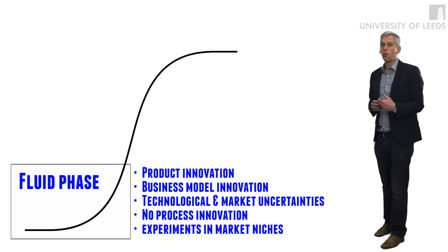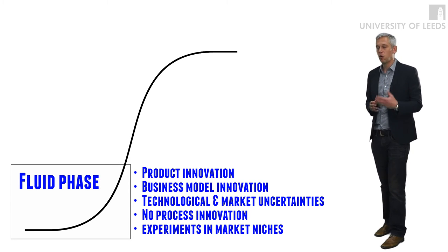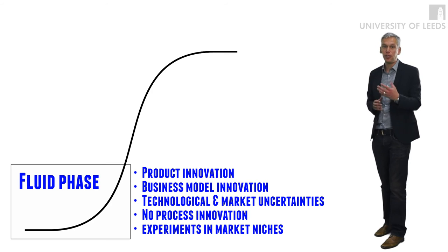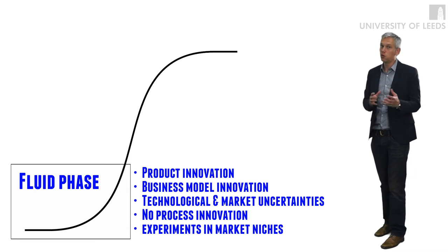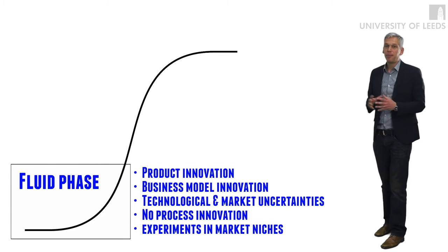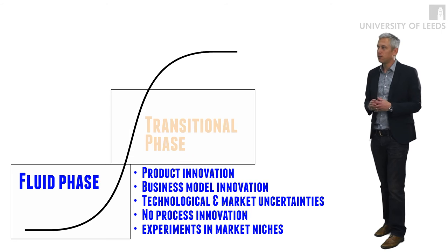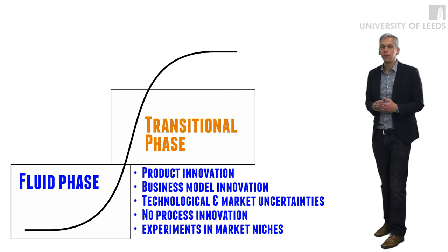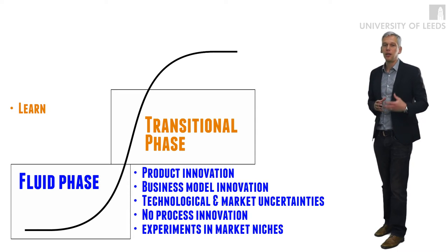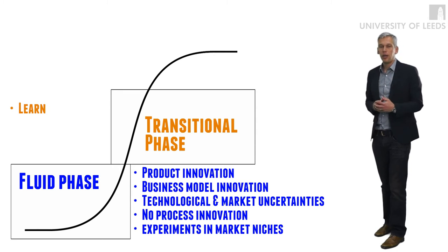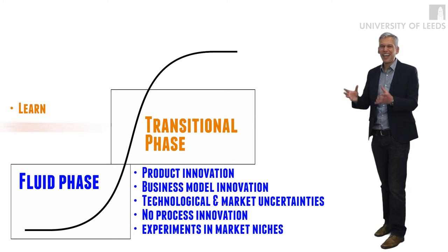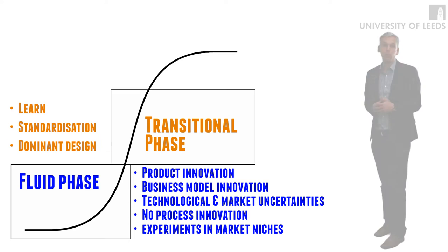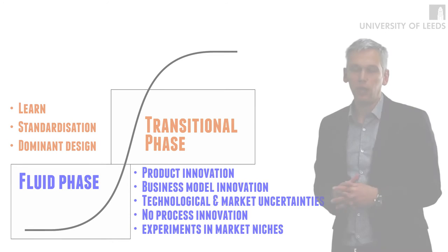Now when the product is already in the market, when customers are already providing feedback and where competitors usually come with similar products, then the dynamics definitely change — and this is called the transitional phase. This is the phase where companies learn much more about the market, much more about the product and the technologies, so the product becomes much more standardized. We see the emergence of the so-called dominant design.